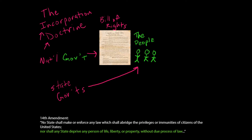Since then, we say the Bill of Rights has been incorporated to the states, meaning it now extends down and protects us from the states — but not always. A lot of people would say, well, surely if the big bad national government can't do something, the measly state governments can't do it either. But that's a misunderstanding of federalism. The state governments have a lot of powers that the national government doesn't have. This makes more sense if you think about the history of the Constitution.